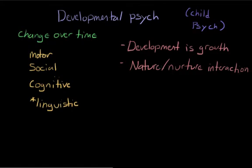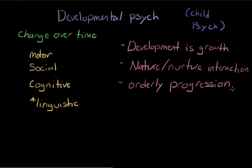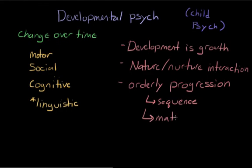The third principle is that development moves in an orderly progression. Kids don't usually go from no mobility straight to walking — crawling typically comes in between. Similarly, we don't say sentences before we learn individual words. What we mean by orderly progression is that development follows a basic sequence, and the timing of that sequence — exactly when things develop — is a lot less important than the sequence itself. This orderliness is also due to maturation, which refers to the genetic and biological instructions that cause different body and mental functions to appear in a certain sequence. Maturation tends to set the basic course of development, which is then adjusted by our different environments and experiences.